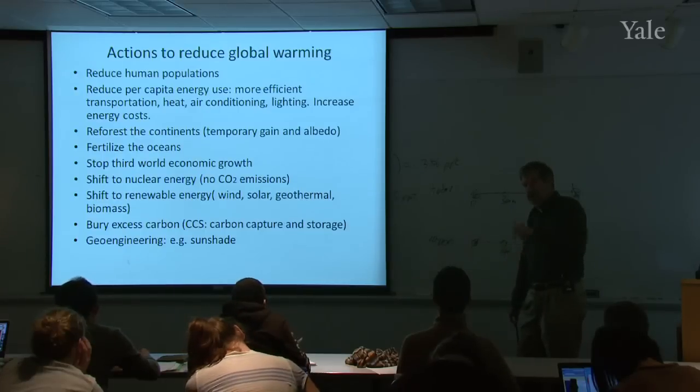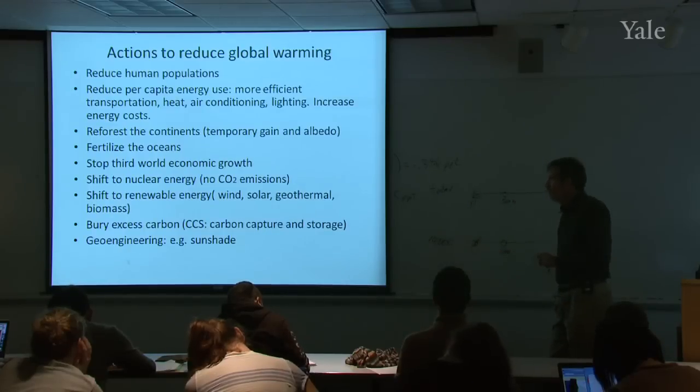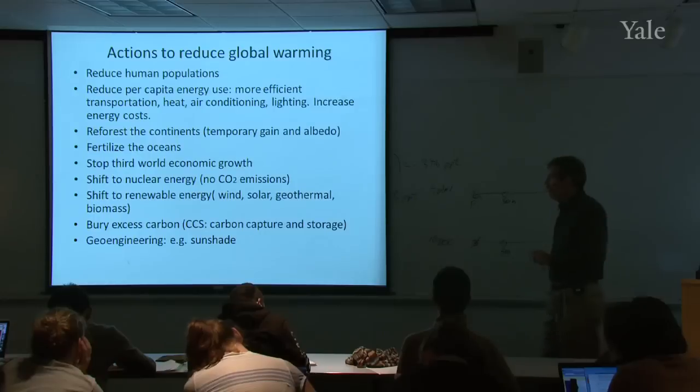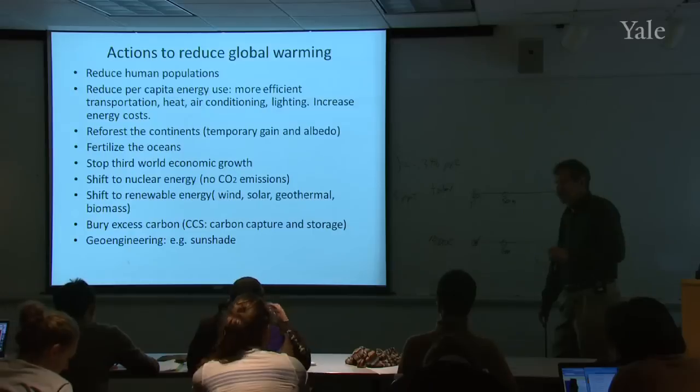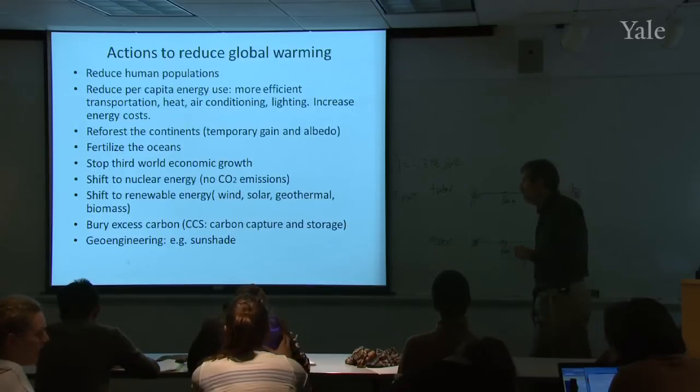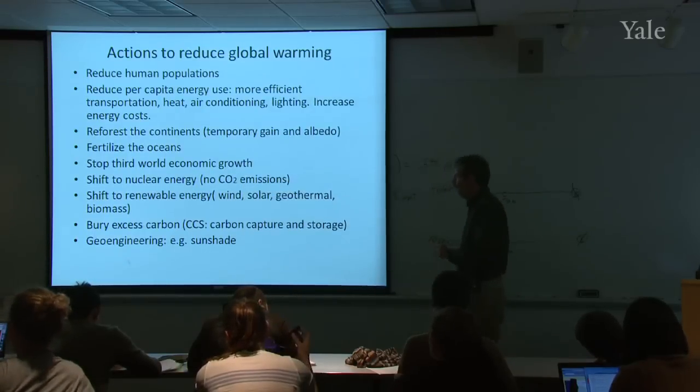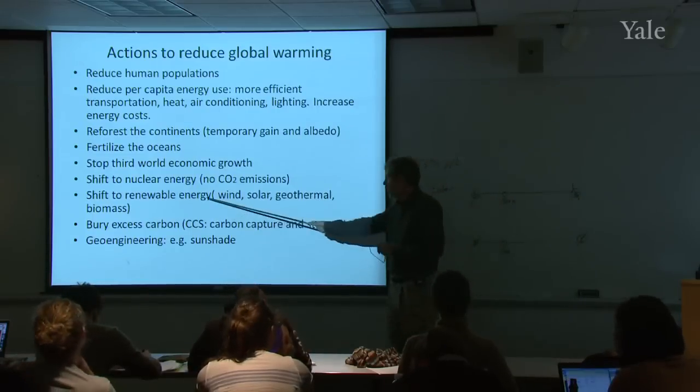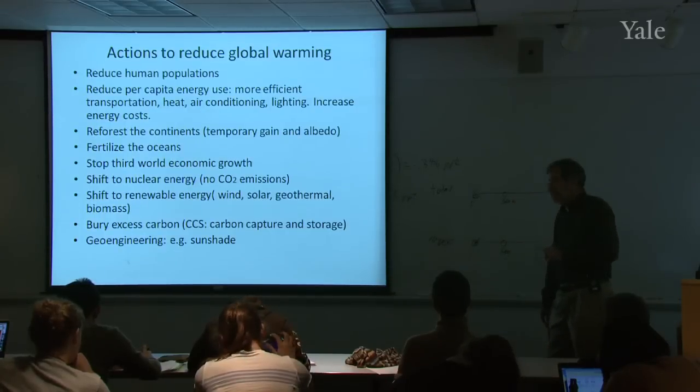Stop third world economic growth. That's kind of a joke. Because how in the world would you do that? Of course, in the first world, we emit much more carbon dioxide per capita than the third world does. That's because we have a higher standard of living, and the third world aspire to have the same standard of living that we do. That's going to be where a lot of the increasing CO2 emissions will come from. Shift to nuclear energy. Nuclear energy does not emit any carbon dioxide. Shift to renewable energies of various types, wind, solar, geothermal. I'm going to be talking about these in the last week of the course.